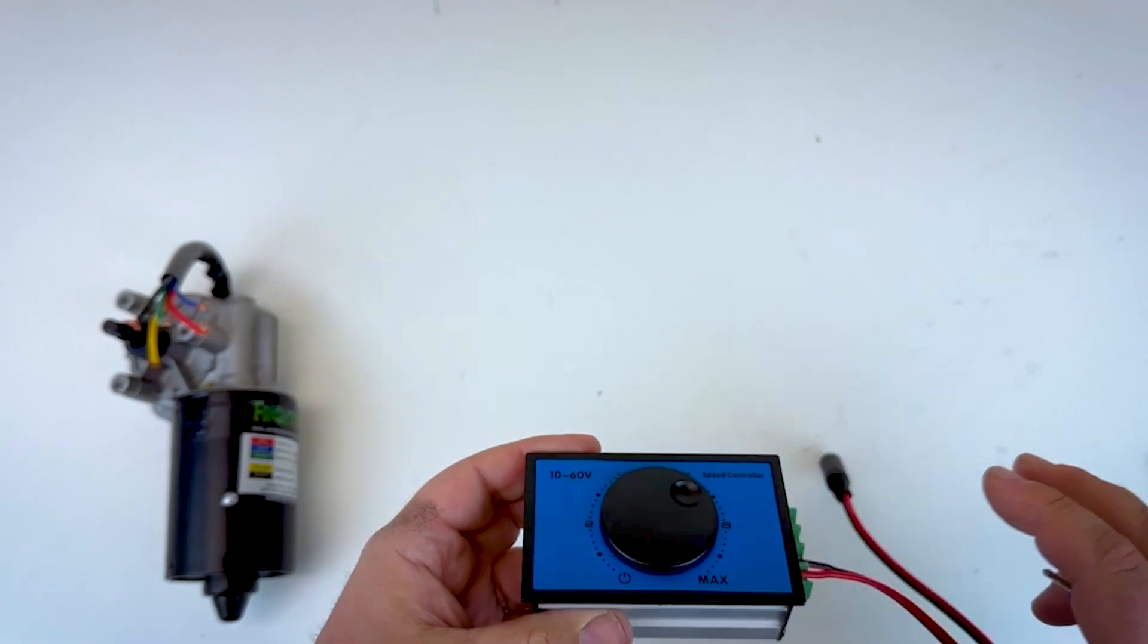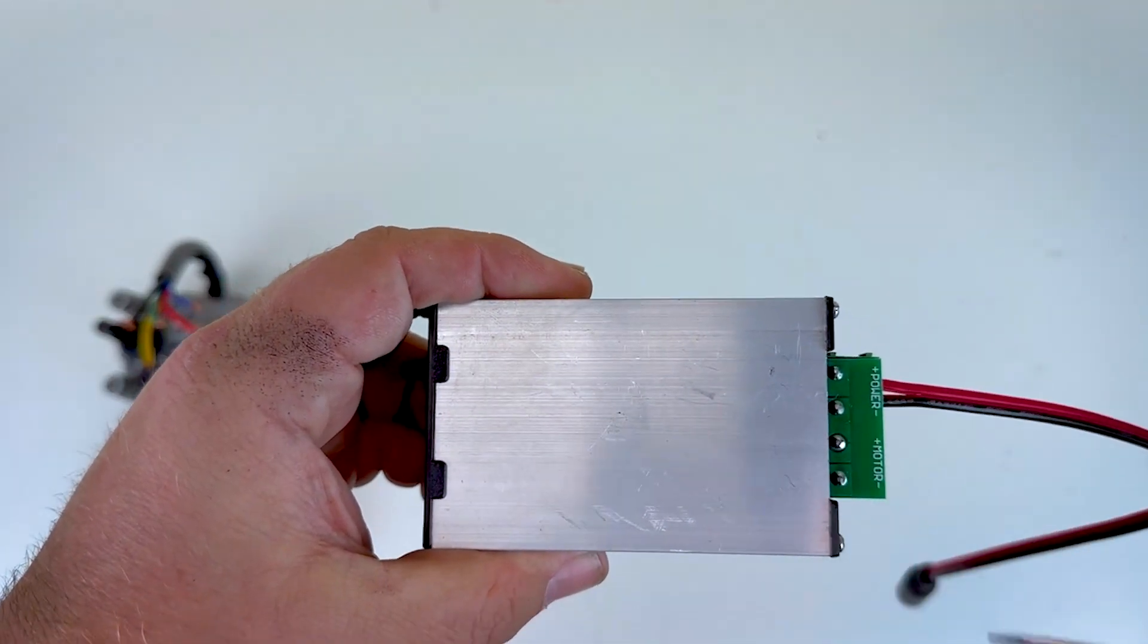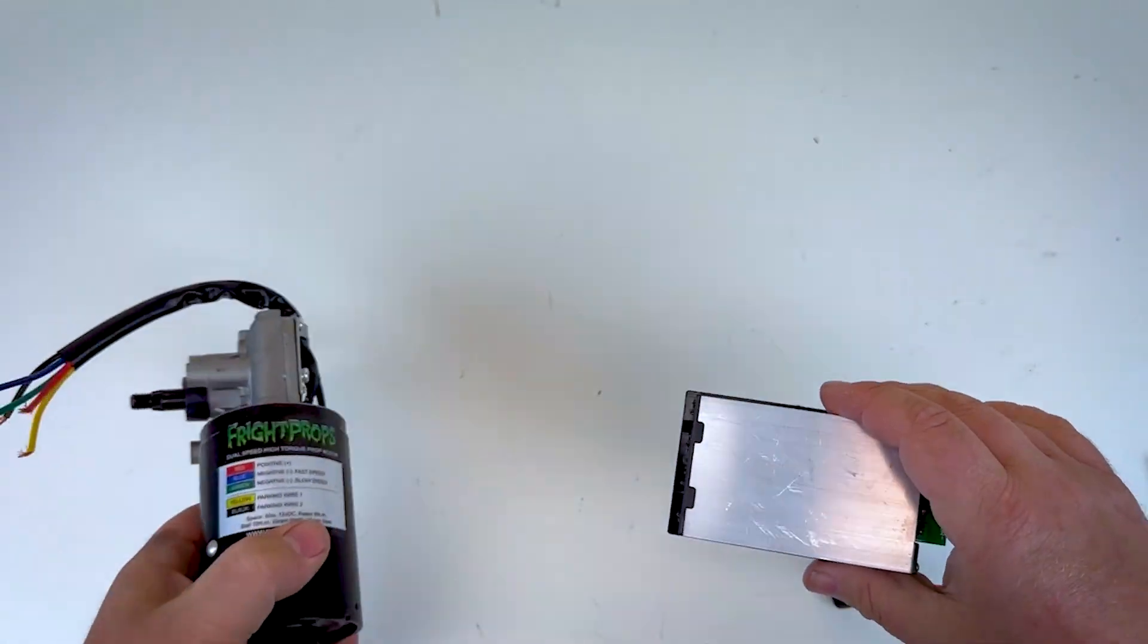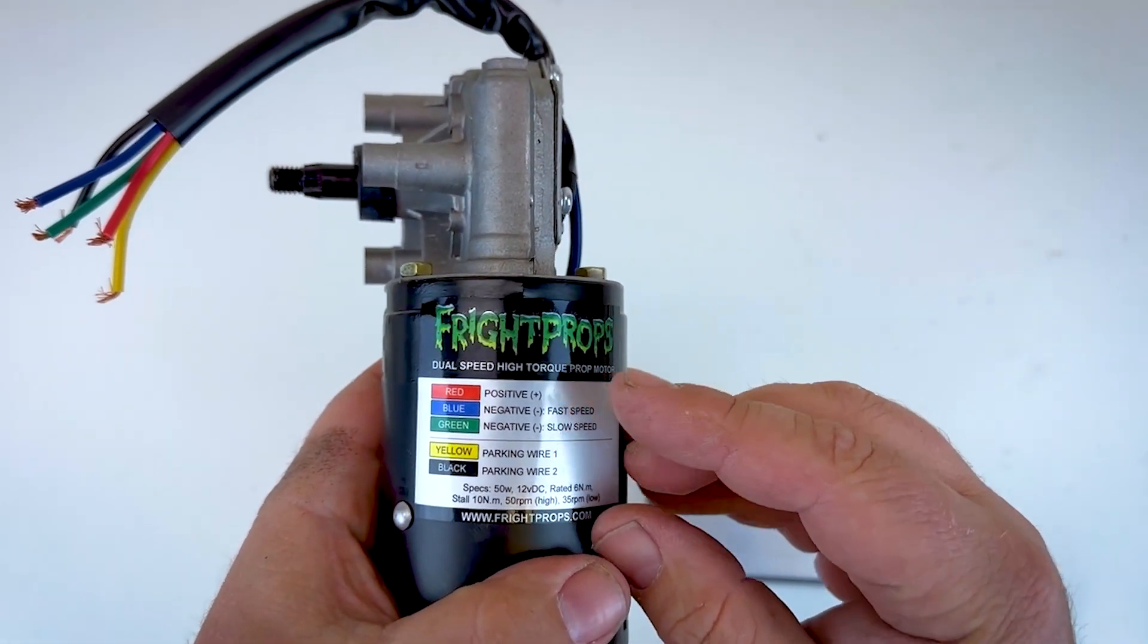Next up we'll wire the motor to the speed controller. So again you can see that there is a motor plus and a motor negative here. Looking at the motor itself we can see that red is plus and then again we have two negative wires either blue or green.